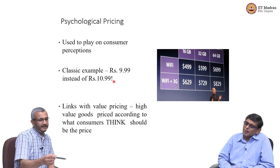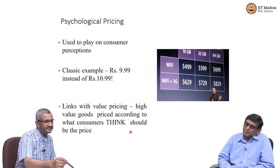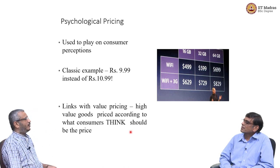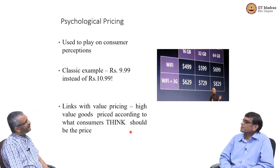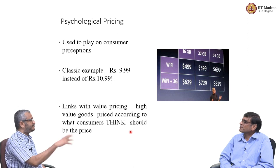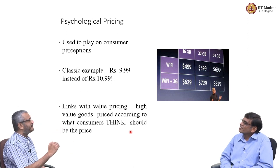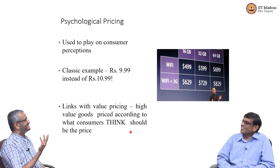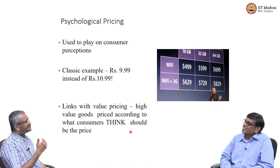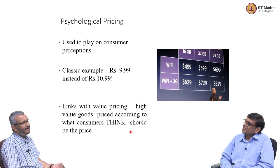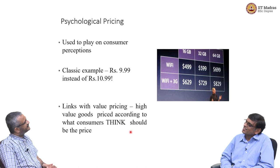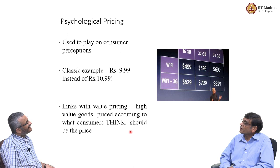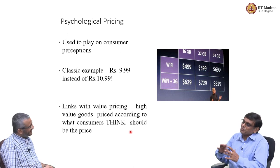This is charging according to what consumers think the price should be. When I keep a threshold like 'it is not worth paying more than this much for a coffee,' the firm prices just below that. Marketing and psychology are closely related — people do not have a mathematical sense of numbers. 499 may feel like 400 or 300, but 500 suddenly feels like a big, upper-threshold number.